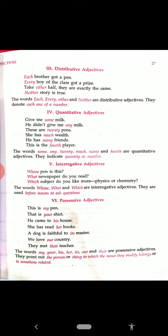The fifth one is interrogative adjective — means a question is being asked. Whose one is this? What news do you read? Which subject do you like most — physics or chemistry? The words whose, what, which are interrogative adjectives. They are used before nouns to ask questions.